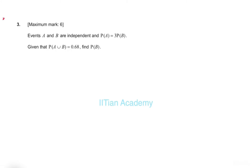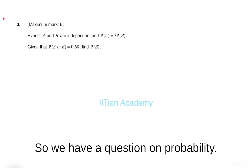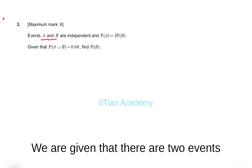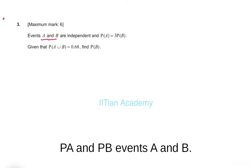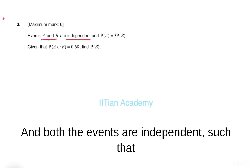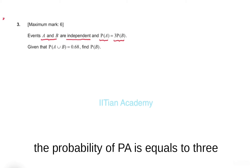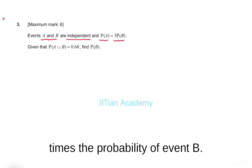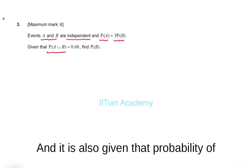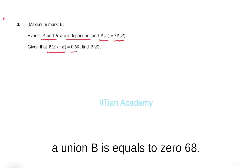Hello friends, we have a question on probability. We are given two events A and B. Both events are independent, such that the probability of A equals three times the probability of event B.